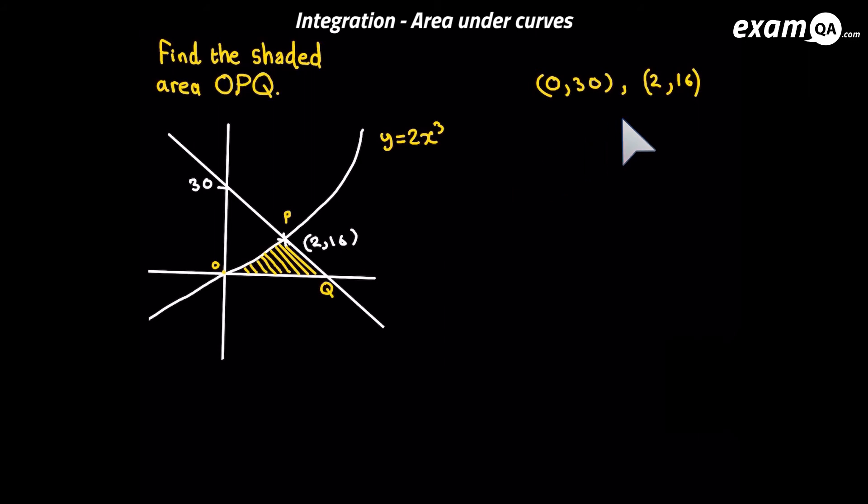let's first work out the gradient and you should be able to work out the gradient is changing y over changing x and we get minus 7. Now whenever you're doing gradient make sure you go the same way. For example, I've gone 30 minus 16. I must go the same way when I'm doing the subtraction of the x's. I need to do 0 minus 2.